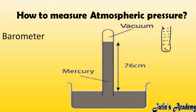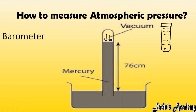Put your thumb on the test tube so that no air particles can move inside, then invert it into a trough of mercury. When inverted, due to the weight of mercury and acceleration due to gravity, mercury moves downward. Since there is no air particle inside the inverted test tube, a vacuum is created at the top. Outside, atmospheric pressure is higher, while inside the pressure is less.